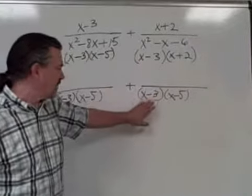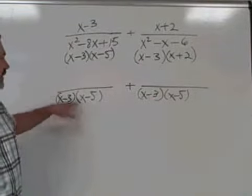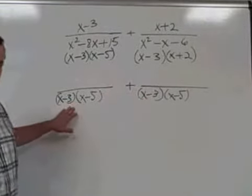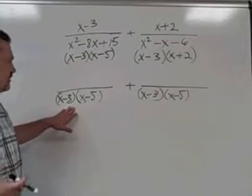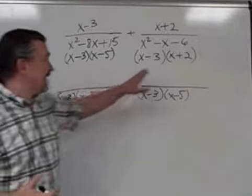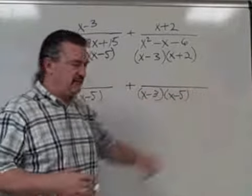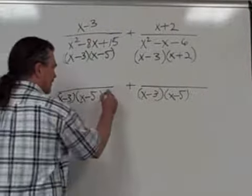x minus 3, x minus 5, I've already accounted for. It only occurred one time in each denominator, so it only has to occur once in the least common denominator. x plus 2 is a factor in this denominator, so it must be included as a factor in the common denominator.